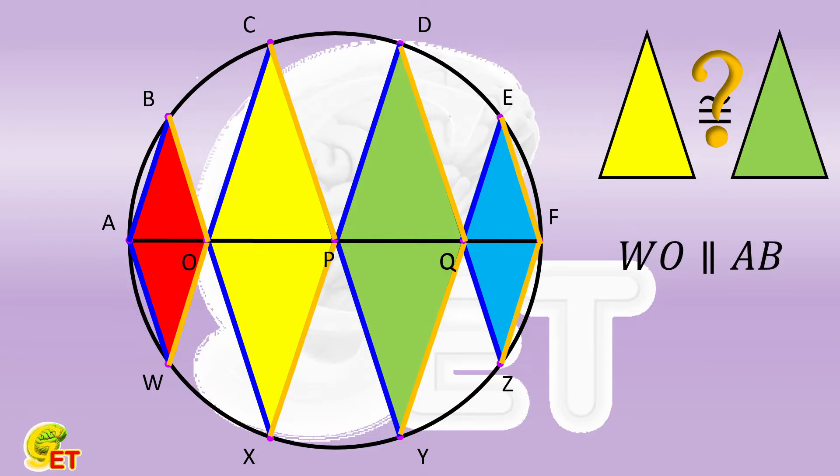We have already proved that OC and AB are also parallel. So the points W, O, and C are on the same line. For the same reason, other corresponding points are also on the same lines.